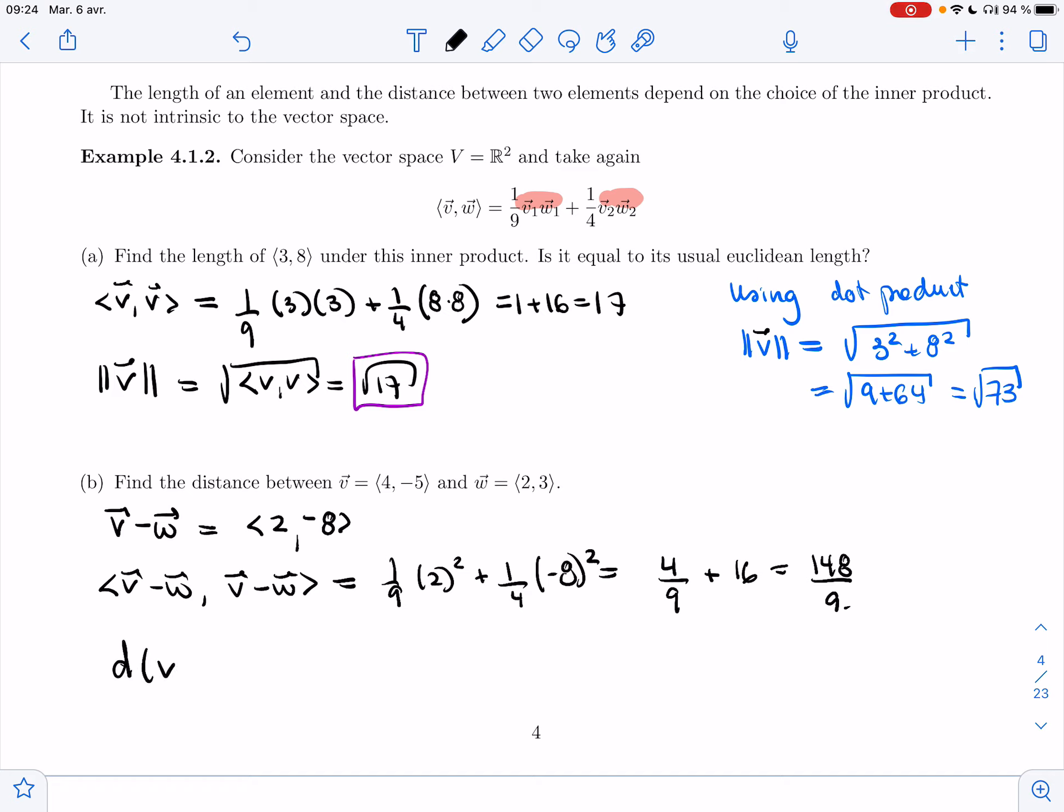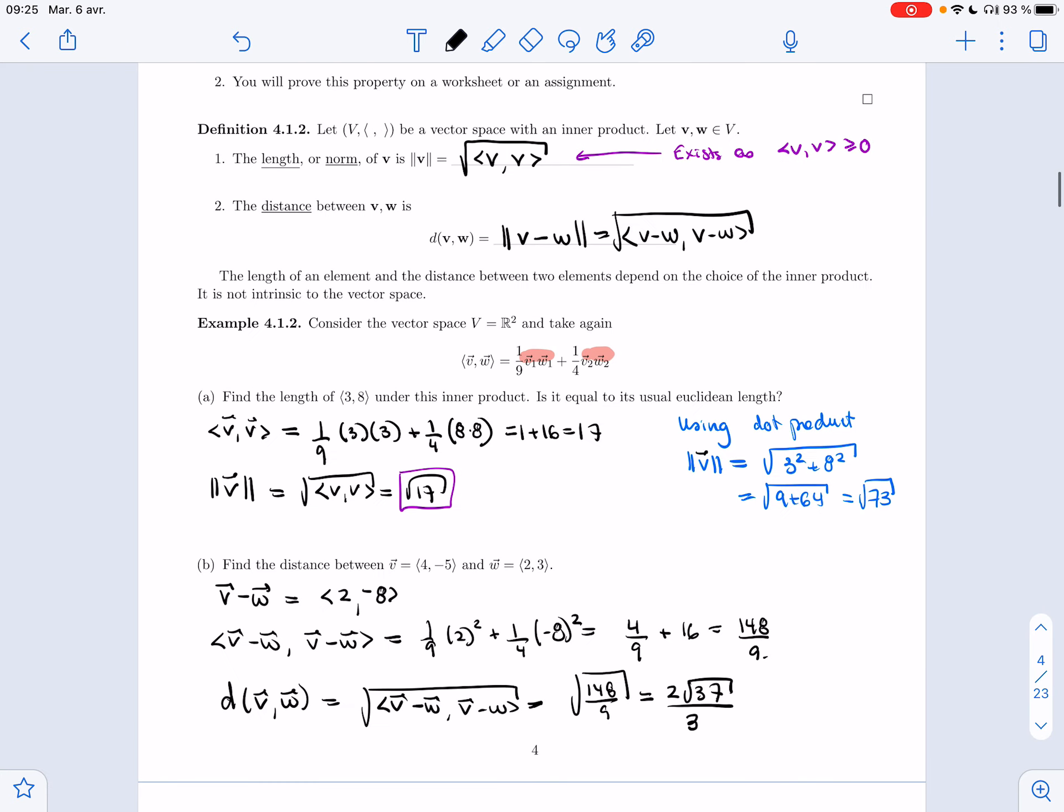And so I got 148 over 9. And so the distance between v and w is the root of that, which if you simplify, you get - I got 2 root of 37 over 3.